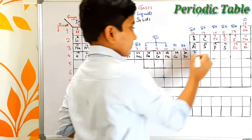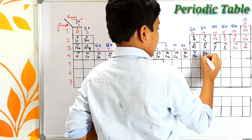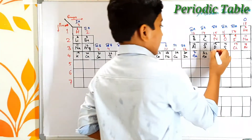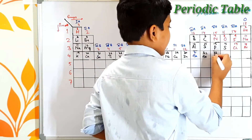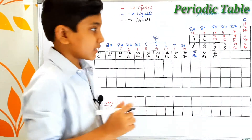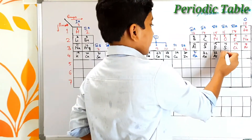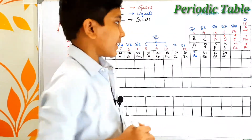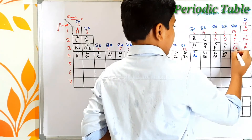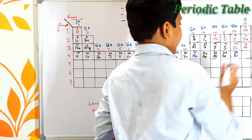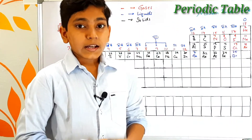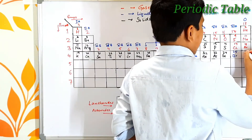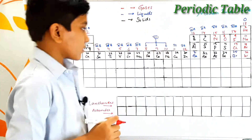After zinc we find atomic number 31 which is gallium, then atomic number 32 which is germanium, atomic number 33 which is arsenic — its symbol is As, atomic number 34 is selenium — its symbol is Se. Atomic number 35 is bromine — its symbol is Br. The next element is krypton with atomic number 36.